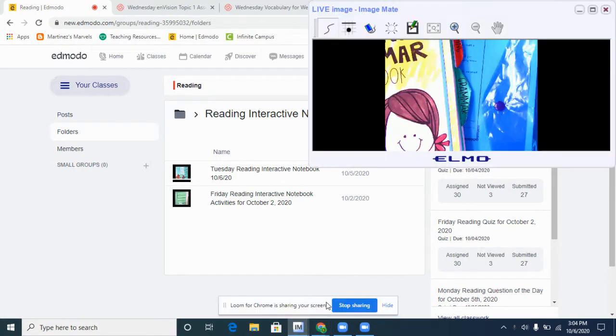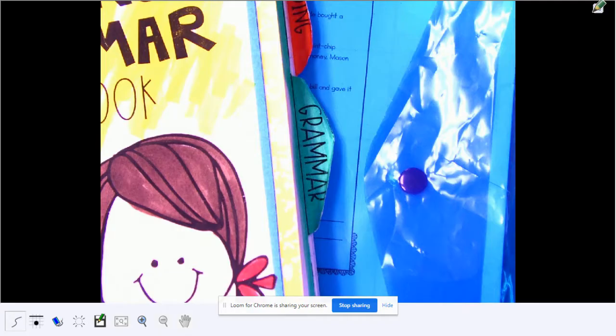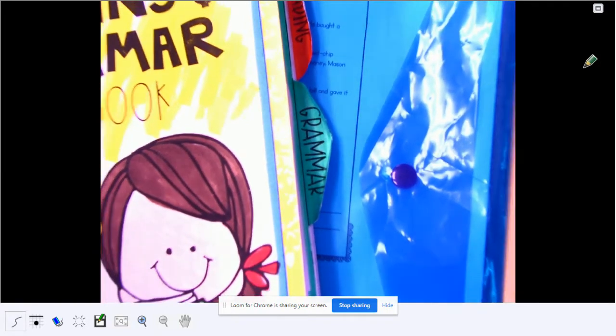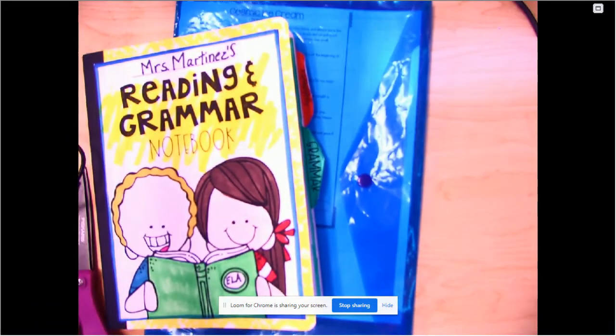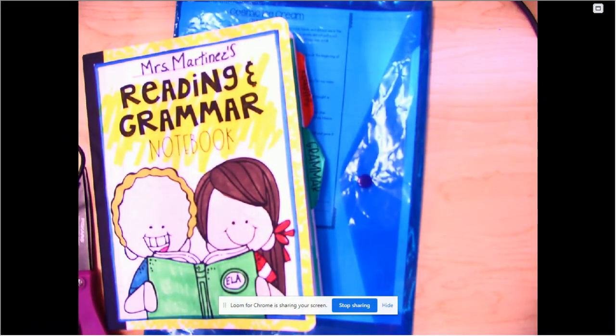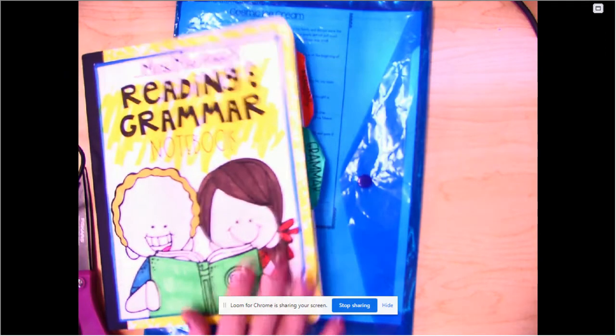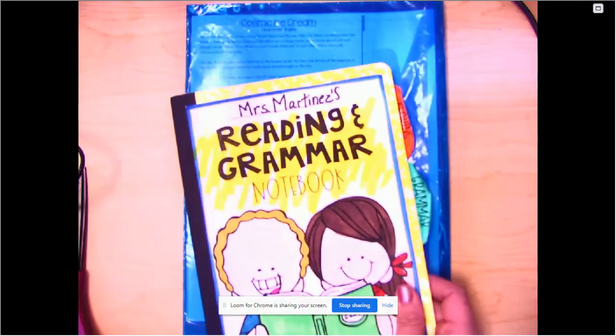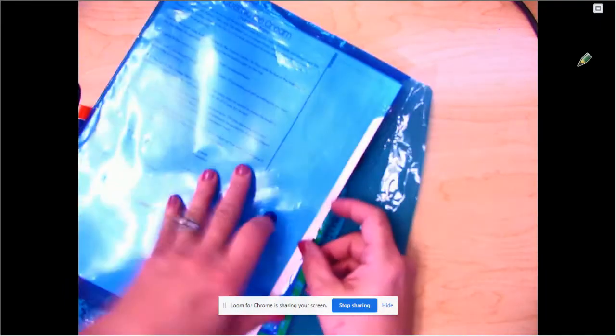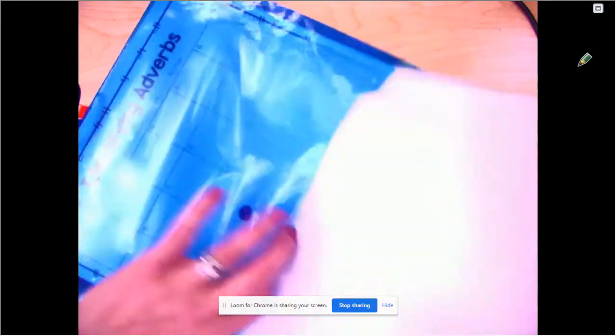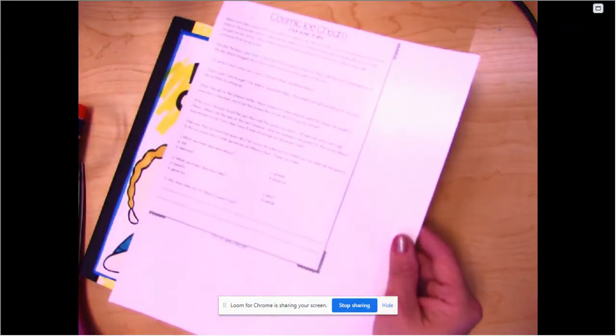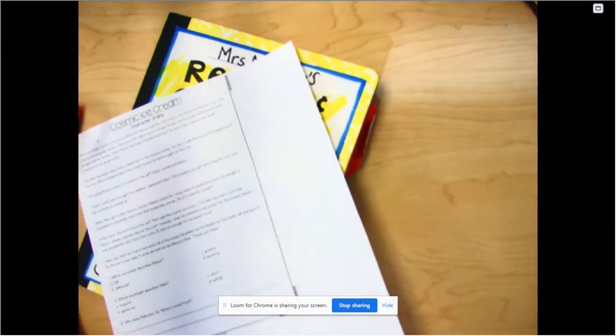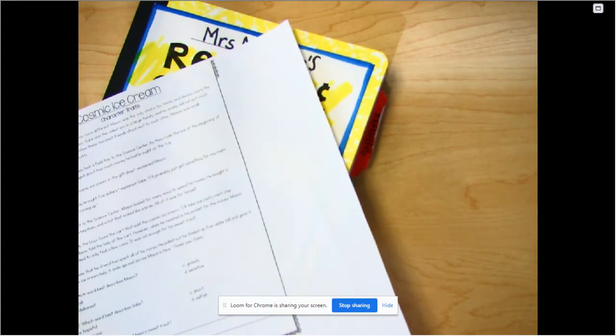Okay, so here is what you'll need in the papers in the next folder. We have our reading and grammar notebook, and then we need our little envelope. We're going to take out our Cosmic Ice Cream story, and you're going to need your scissors.